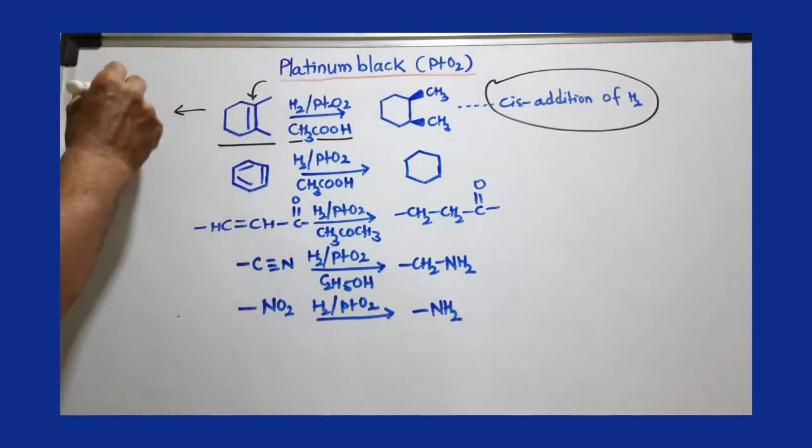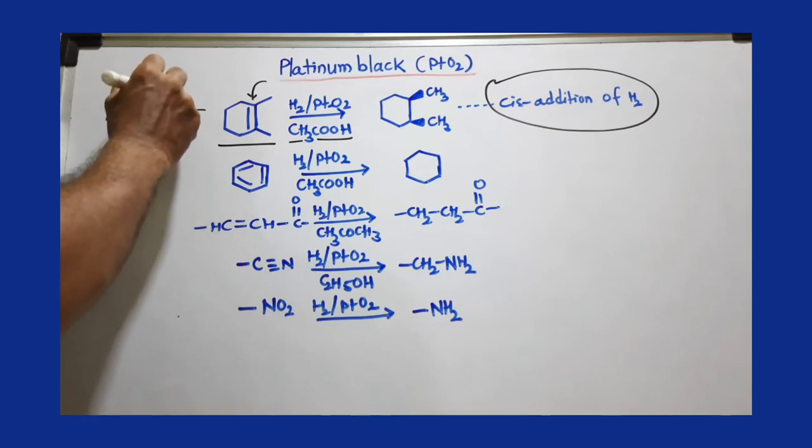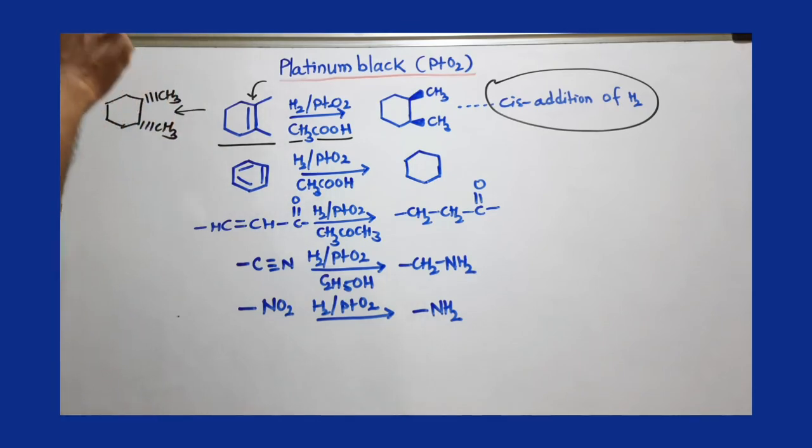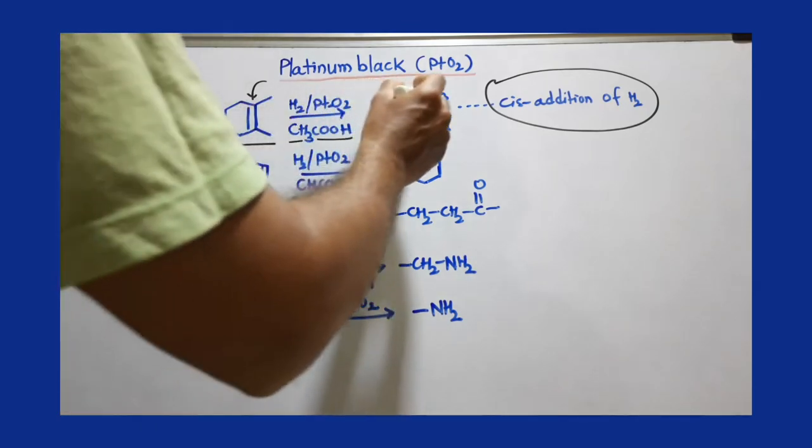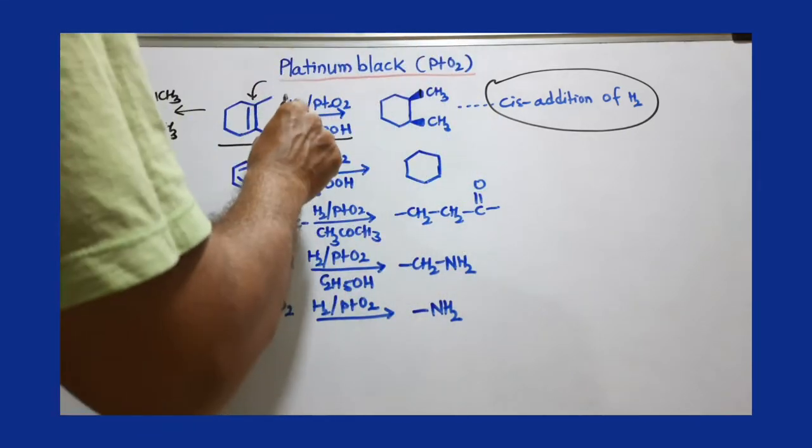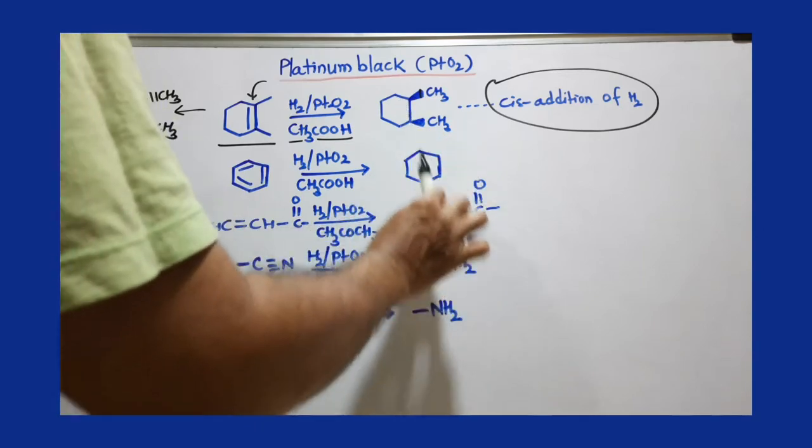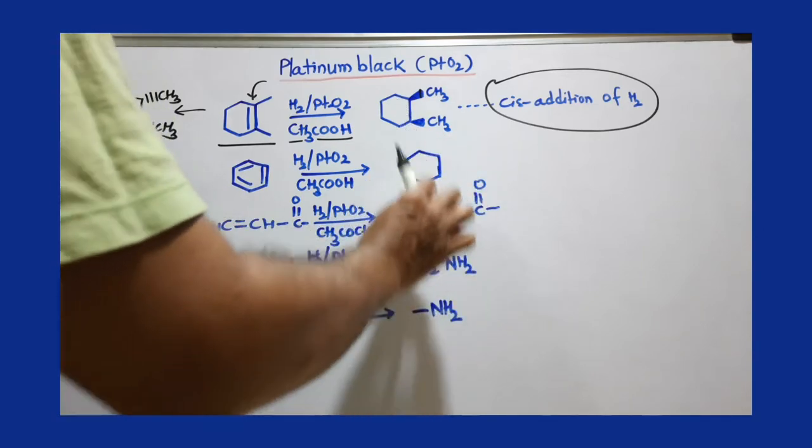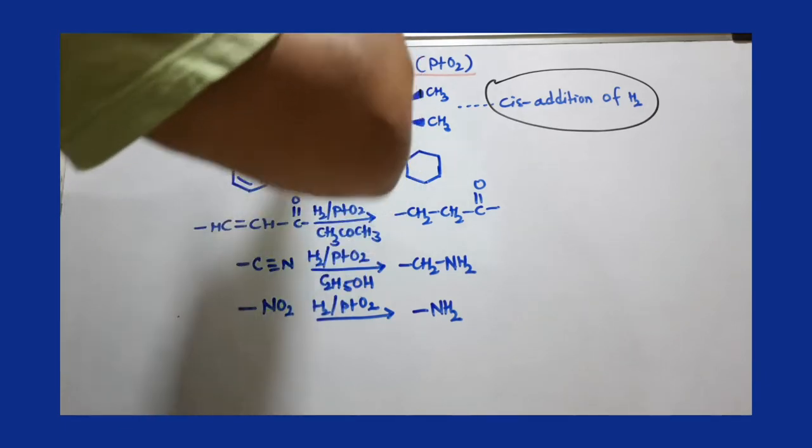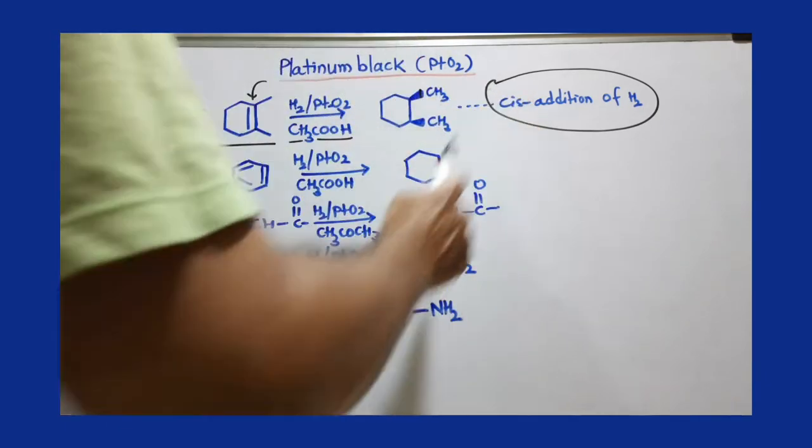...you will get this product where both methyl groups will be down. If these are broad wedges, these two methyl groups are from the upper side, meaning two hydrogens are added from the lower side. So either from the lower side or upper side, but both hydrogens are added from the same side - that is the meaning of cis-addition.